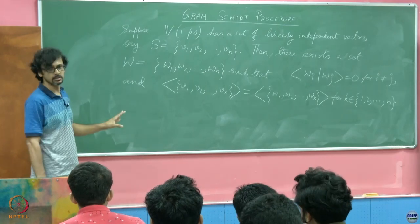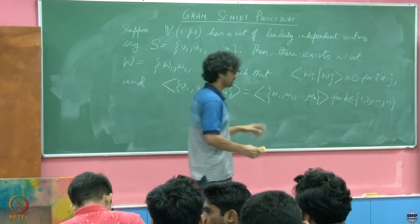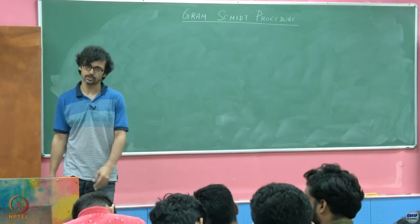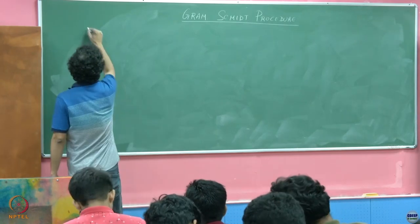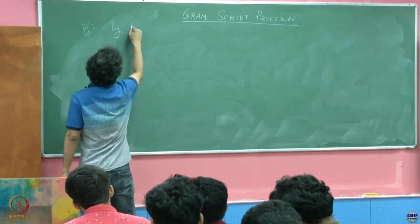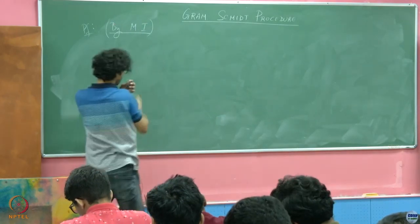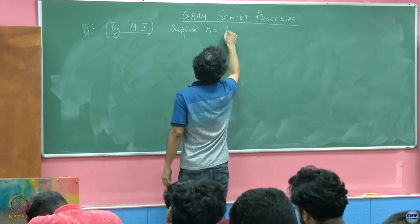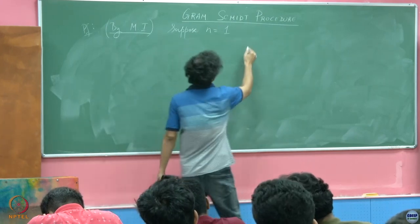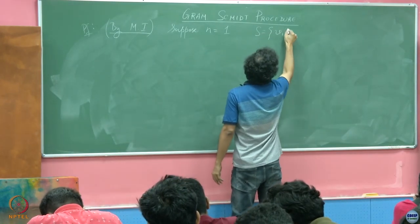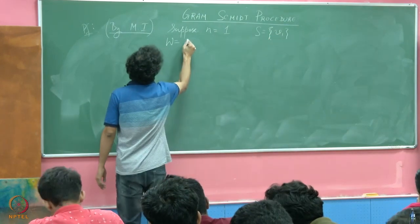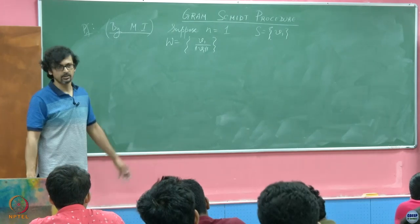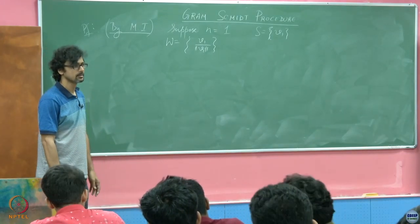How do we go about proving this? We proceed by mathematical induction. The base case n equals 1: S is just {V1}. Choose W to be {V1 divided by norm V1}. There's nothing to prove here — this is the base step.